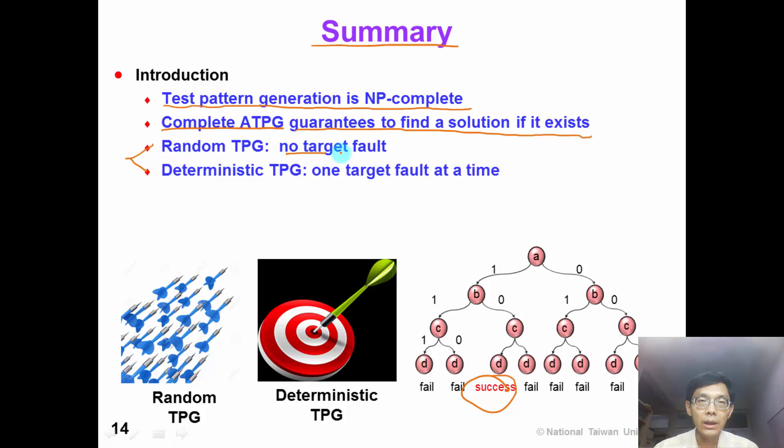The former does not have any target fault. Just like this picture, we throw out a lot of darts, hoping that each of the darts can hit something. On the other hand, deterministic test pattern chooses one specific target fault at a time. Just like this picture, we throw out one single dart to hit the target.